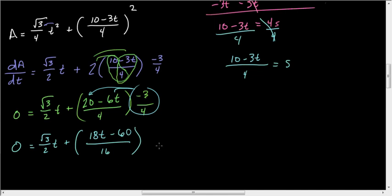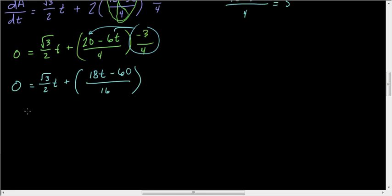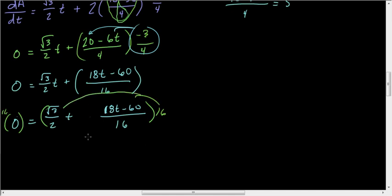I like that better. So now I have 0 equals square root of 3 over 2 T plus 18T minus 60 all over 16. Multiply both sides by 16 to clear the fractions. That's the least common denominator. Be careful when you're doing this, you have to distribute to both things. So I get 0 equals 8 root 3 T plus 18T minus 60.